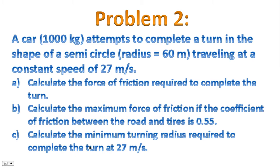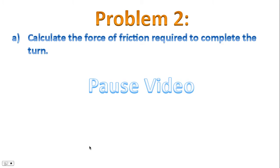Problem 2. A car attempts to complete a turn in the shape of a semicircle, traveling at a constant speed of 27 meters per second. Part A: calculate the force of friction required to complete the turn. Part B: calculate the maximum force of friction if the coefficient of friction between road and tires is 0.55. Part C: calculate the minimum turning radius required to complete the turn at 27 meters per second. Please pause the video and work on Part A.